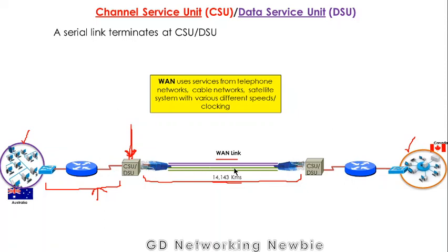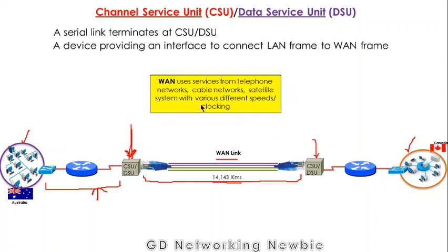This wide area network link is mostly a serial link, and the CSU and DSU are actually the terminating points for this WAN link — you can see them on both sides. These CSU/DSU devices provide an interface to connect LAN frames to WAN frames. From the LAN side we have LAN frames, and from that point onward we have wide area network frames — so CSU/DSU provides that interface.